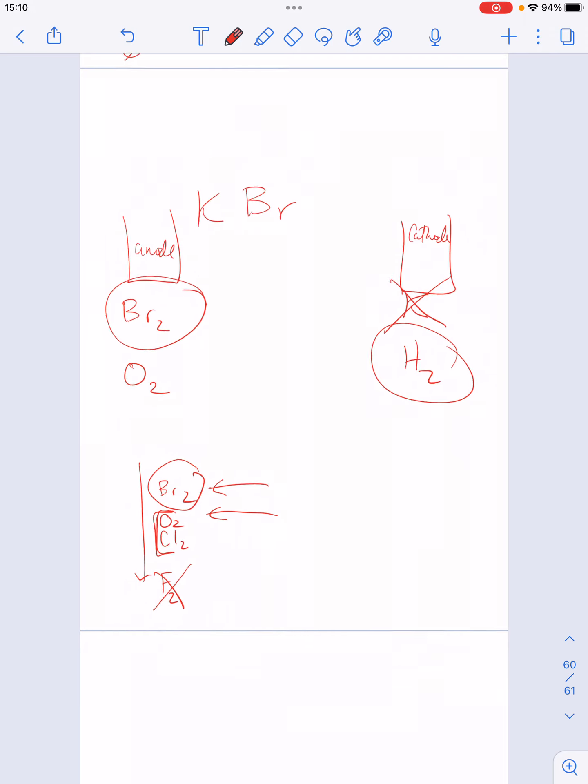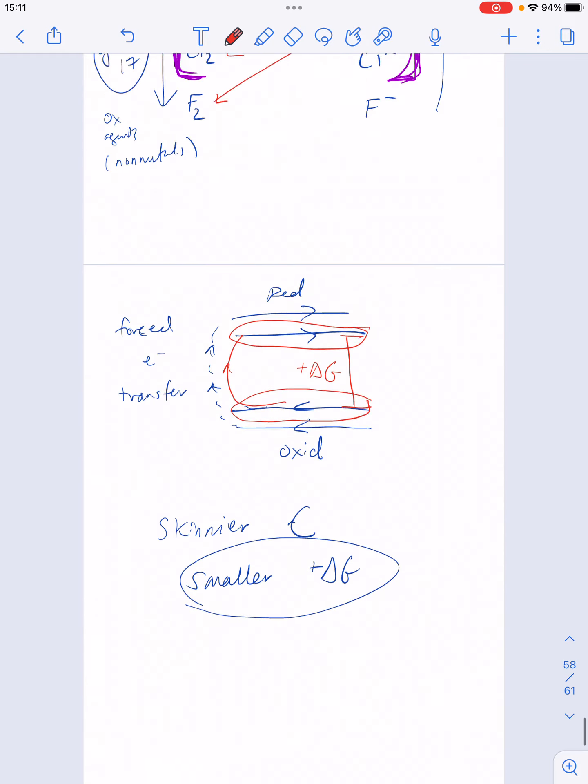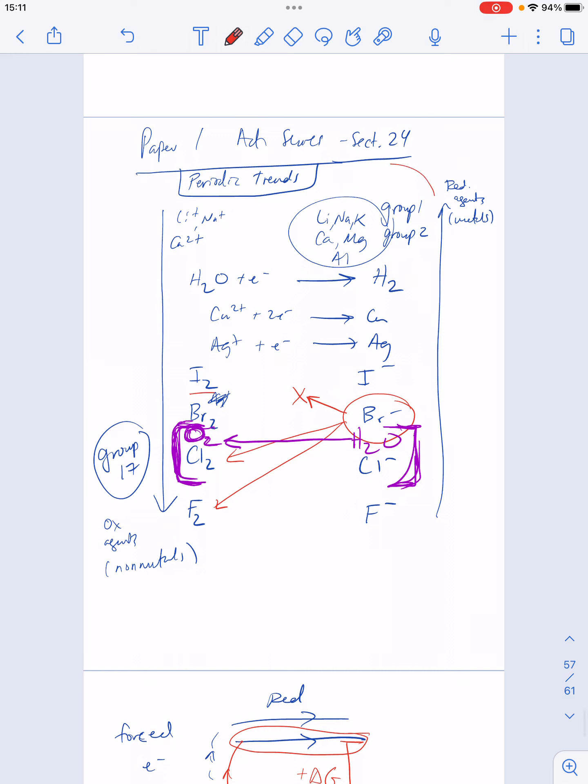So if you can remember things like metal cat, you can remember where you make hydrogen and oxygen, and you can remember some general rules about group one and two, group 17, and where the water oxidation and reductions fit in, then you will be well prepared for paper one questions about this.